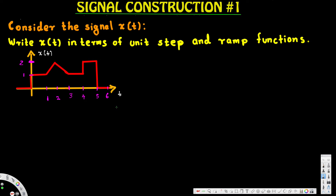Let's look at this problem. The question is asking: consider the signal x(t), write x(t) in terms of unit step and ramp functions. If you look at this graph, at the beginning it's starting with a unit step function. Whenever we have a direct jump, we know that is a unit step function, so we can say x(t) is equal to u(t).